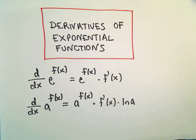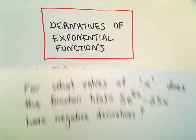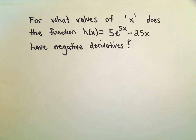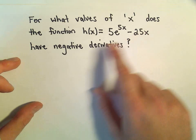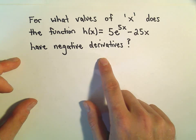Okay, so here we're going to do one more example related to derivatives of exponential functions. In this case, we want to figure out for what values of x does this function, 5e to the 5x minus 25x, have negative derivatives?